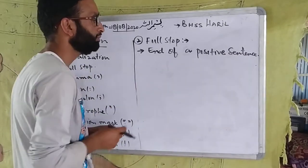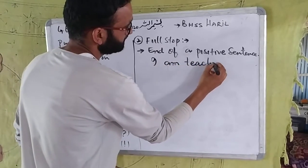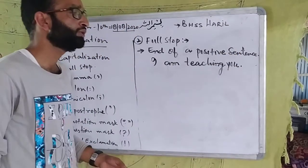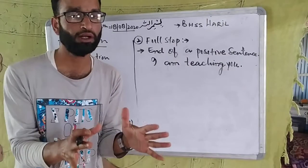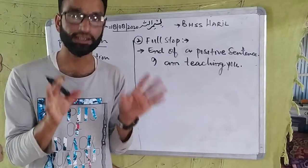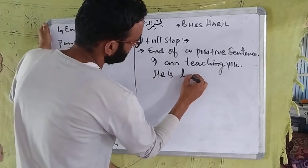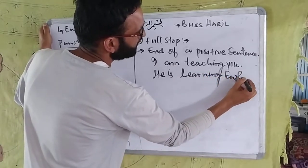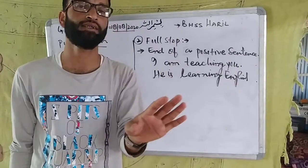For example: 'I am teaching you English grammar.' If we have a positive sentence, then we have a full stop. At any end, you have to add a certain type of punctuation. If you have no full stop, then the sentence will not be considered complete. For example: 'He is learning English grammar' — at the end we have to use a full stop.